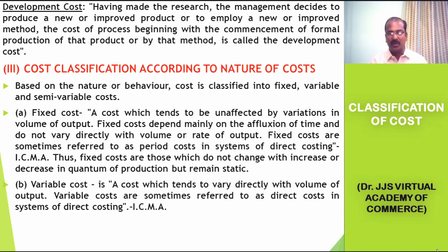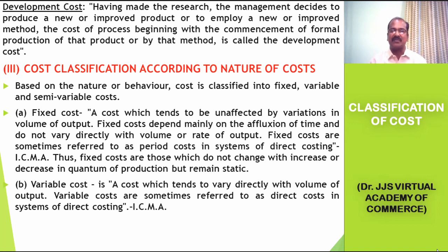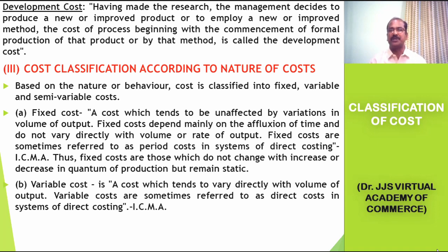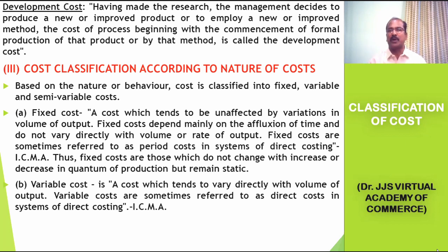Variable cost is a cost which tends to vary directly with the volume of output. The cost per unit remains constant. Good examples include the cost of direct material, cost of direct labor, and cost of direct expenses. For manufacturing one unit of a product, if we spend 5 rupees on material, for manufacturing two units we need to spend 10 rupees. It varies proportionately according to changes in volume of production, and that is why it is named variable cost.